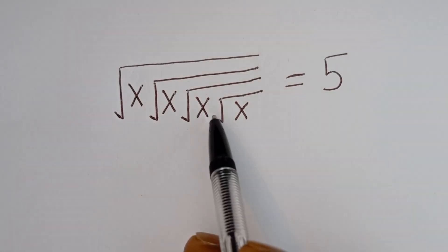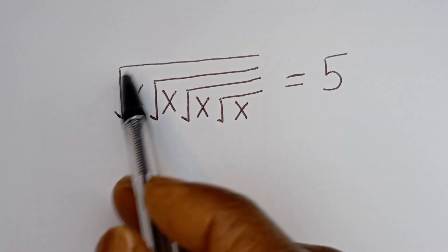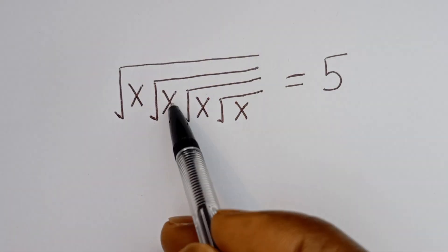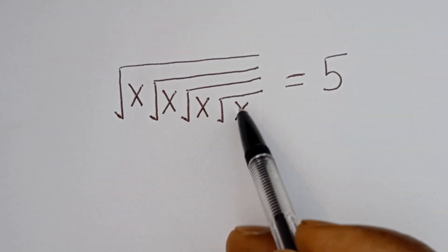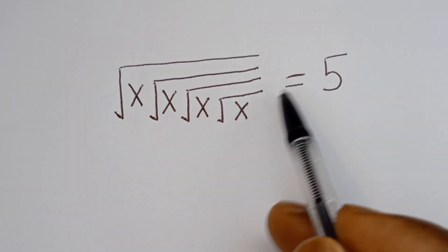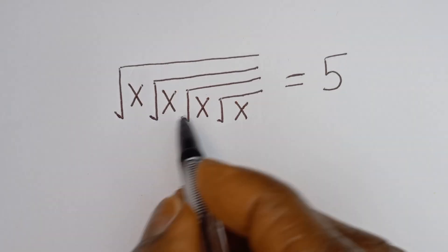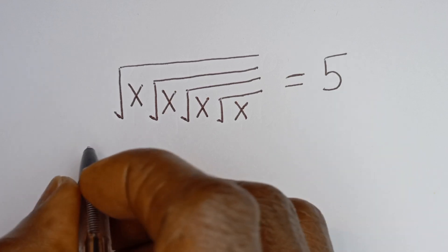Hello. How to solve for x in this equation: square root of x, times square root of x, times square root of x, times square root of x, is equal to 5. We are going to make use of two methods.